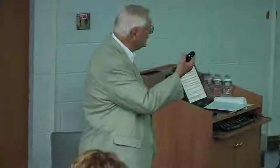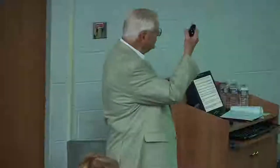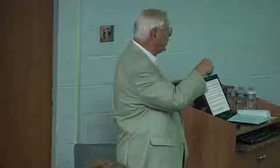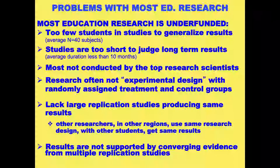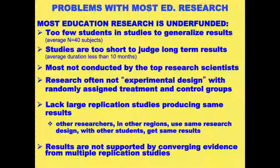Even if 50 people reproduce research with 40 kids and every one of them gets the same result, do you want to base national policy decisions, state policy, your district policy on 40 kids somewhere? You do not. They're too low in numbers, too short. They usually don't use what's called experimental design, which is the gold standard — you have randomly assigned subjects to a control condition and to the experimental condition, and then at the end you can find out if there was a difference.